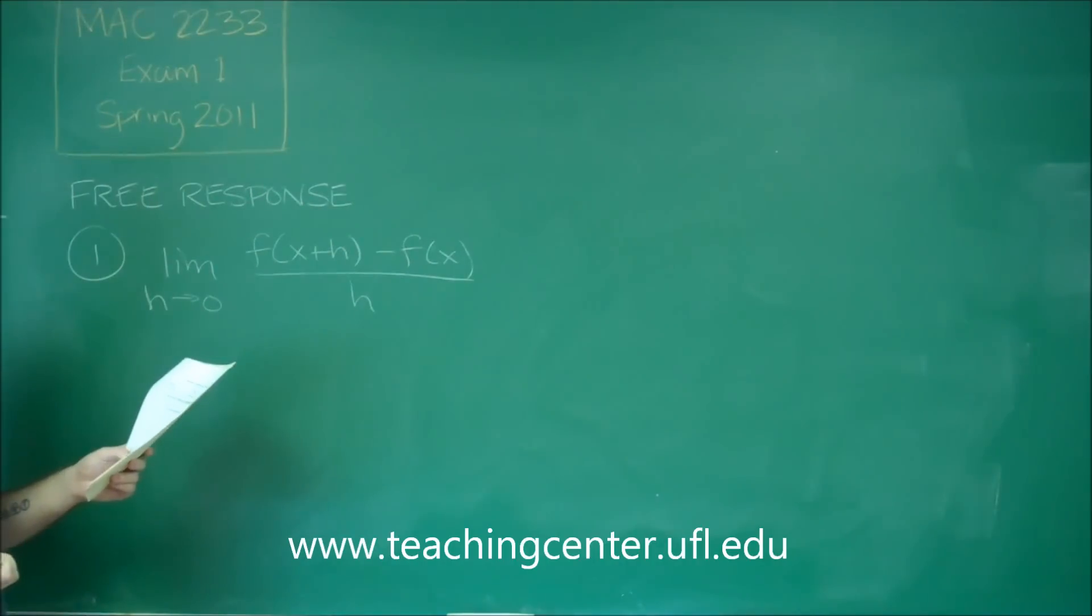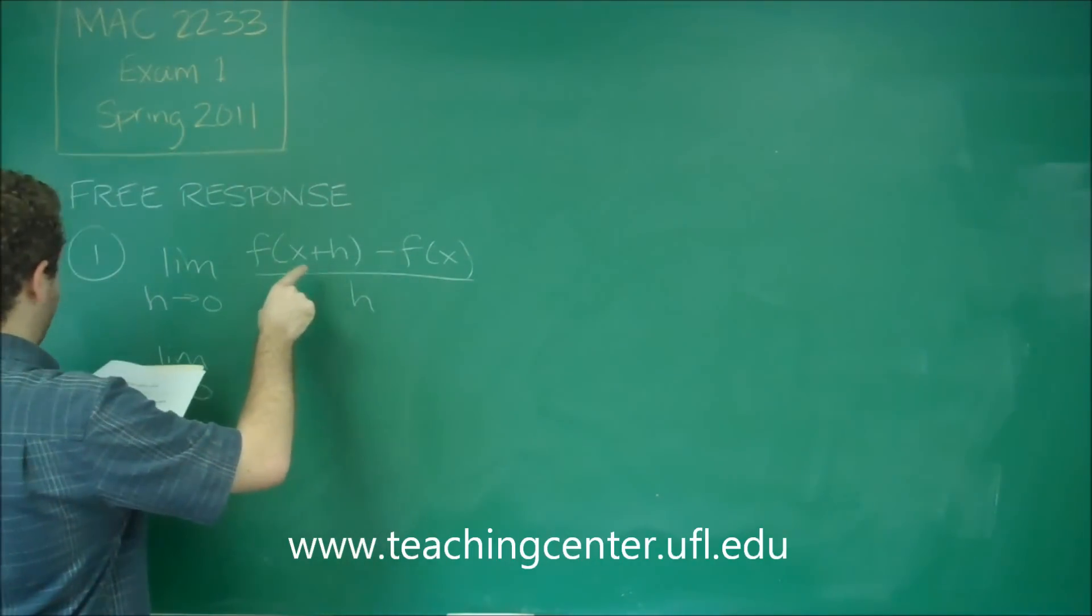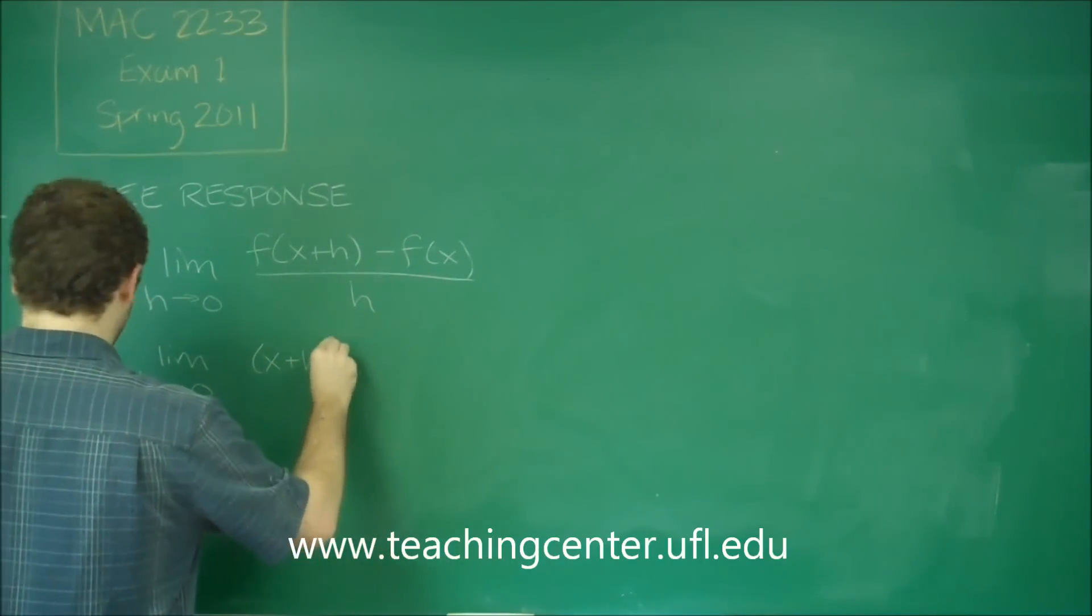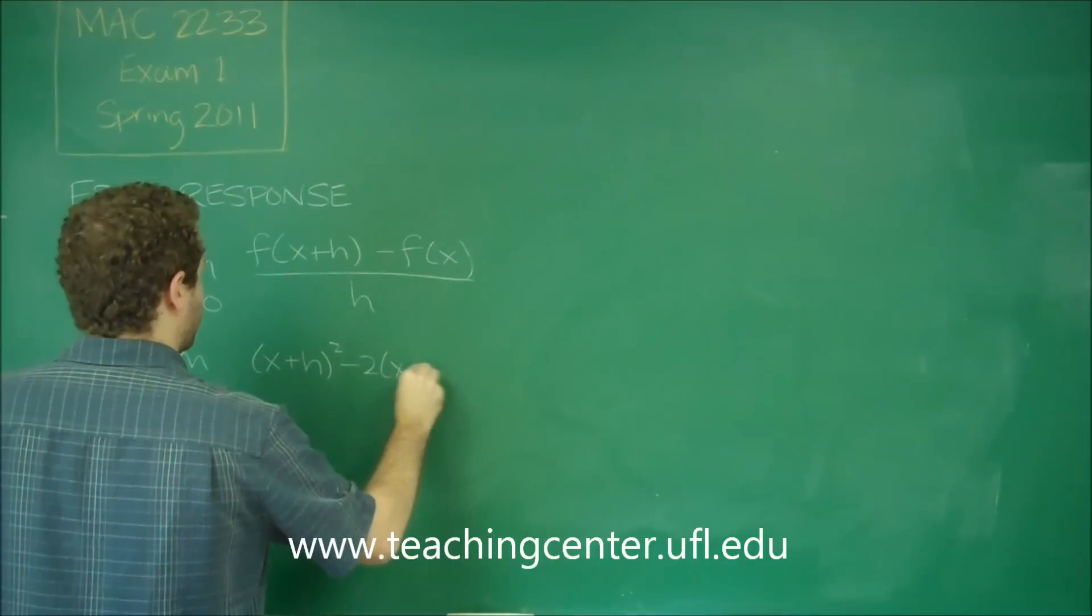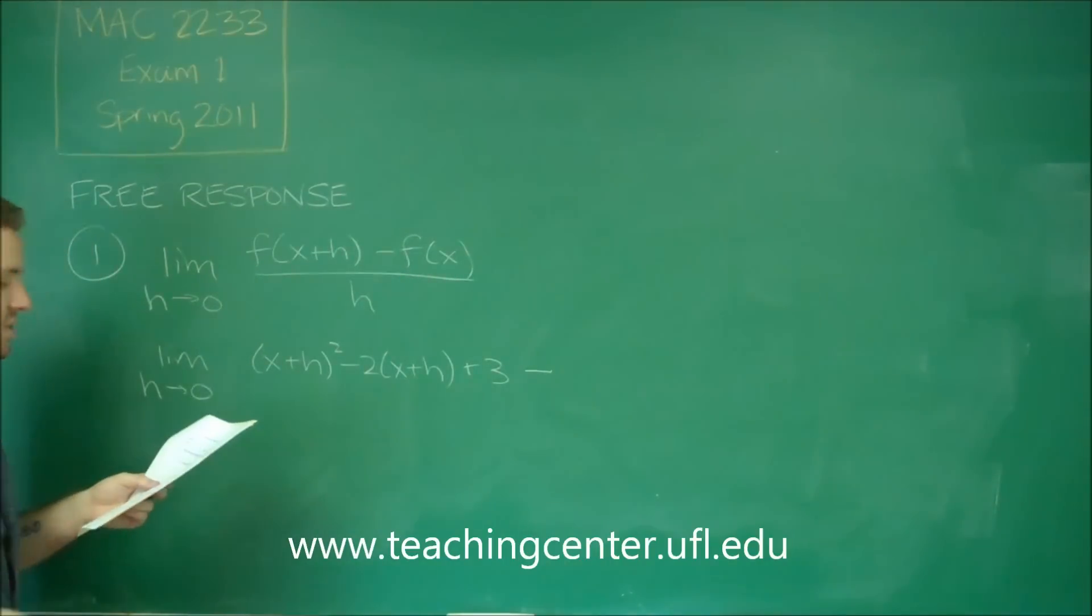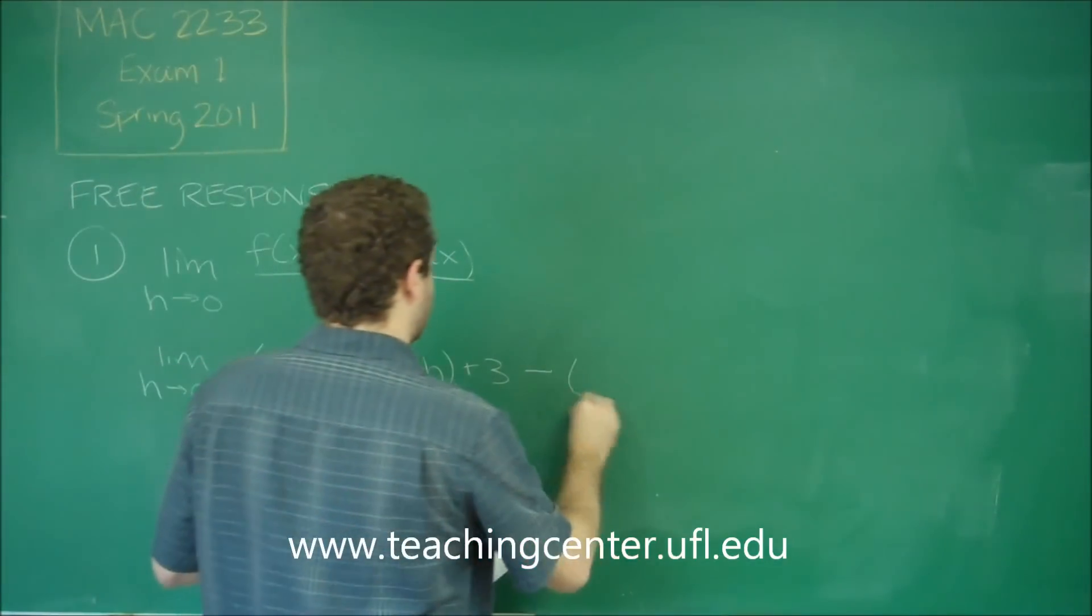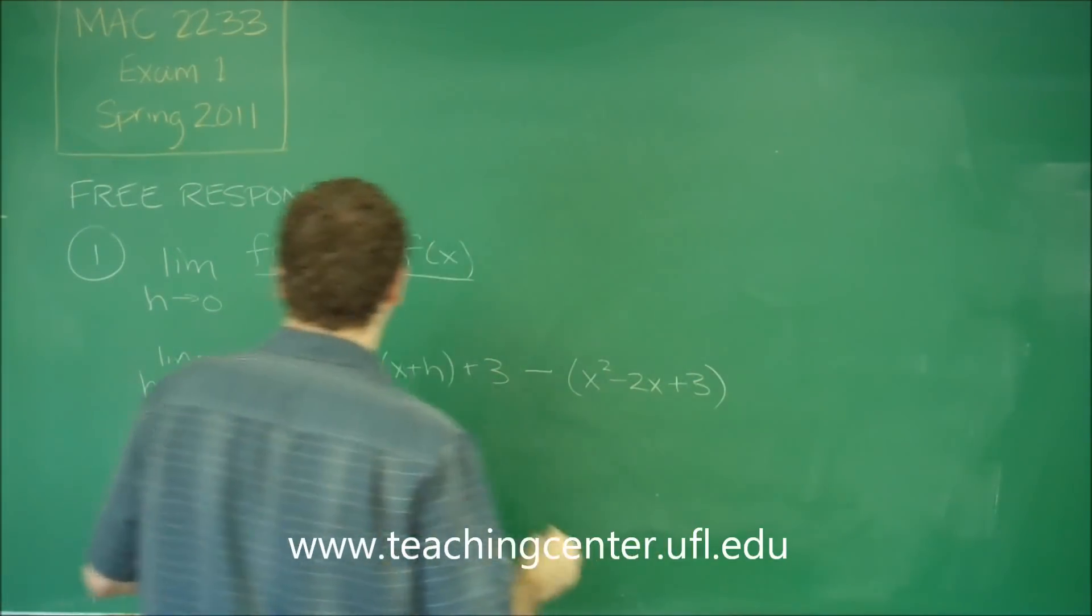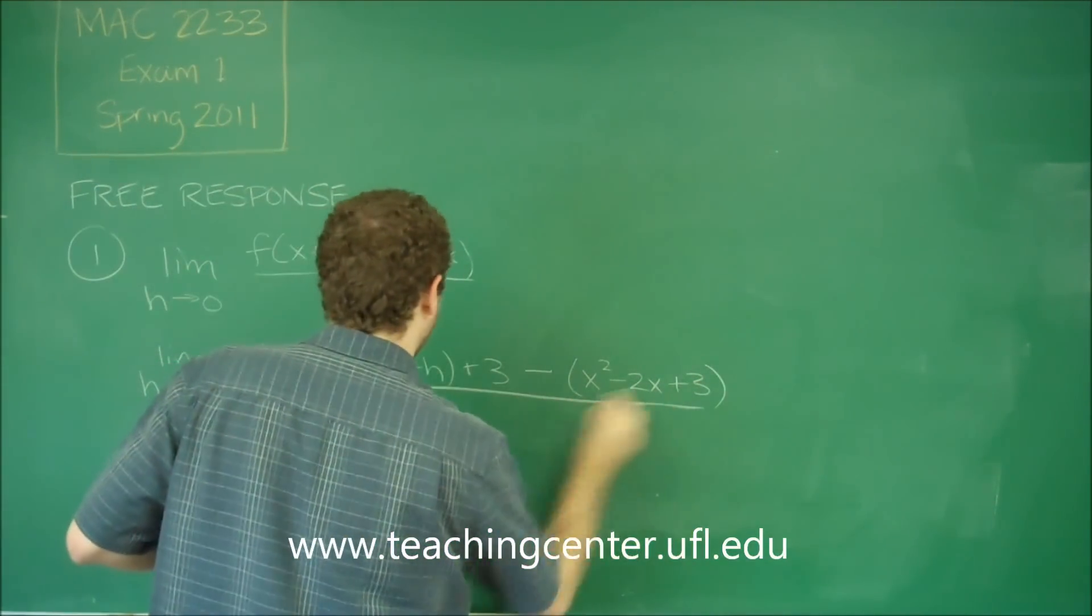So let's use this for our function x squared minus 2x plus 3. So it's important to show all your work, meaning you need to be writing this limit as h goes to zero every step here. So first we take our f and we plug in x plus h instead. x plus h squared minus 2 times x plus h plus 3, minus our just regular function, x squared minus 2x plus 3. And that's all over h.